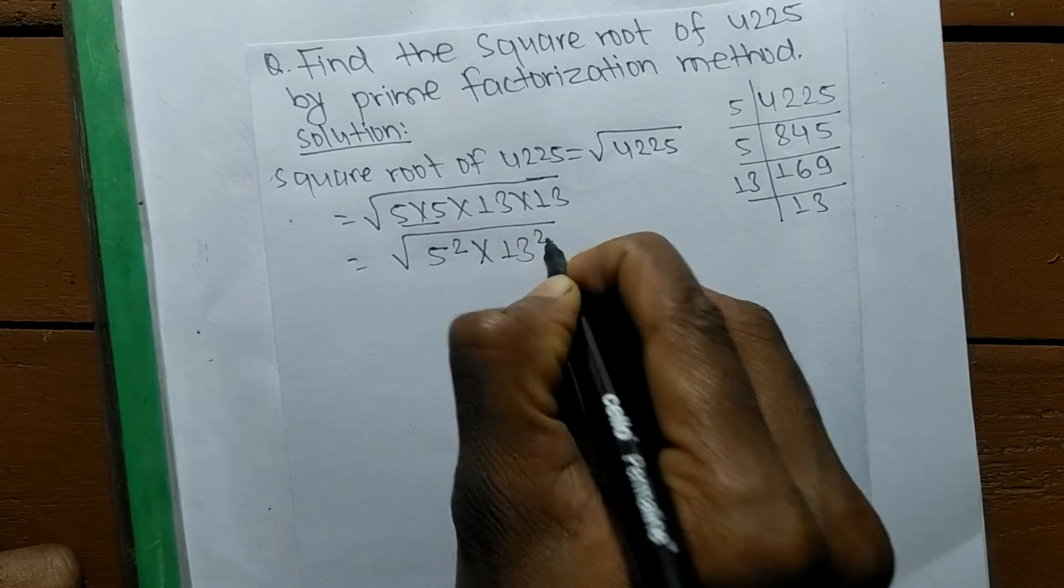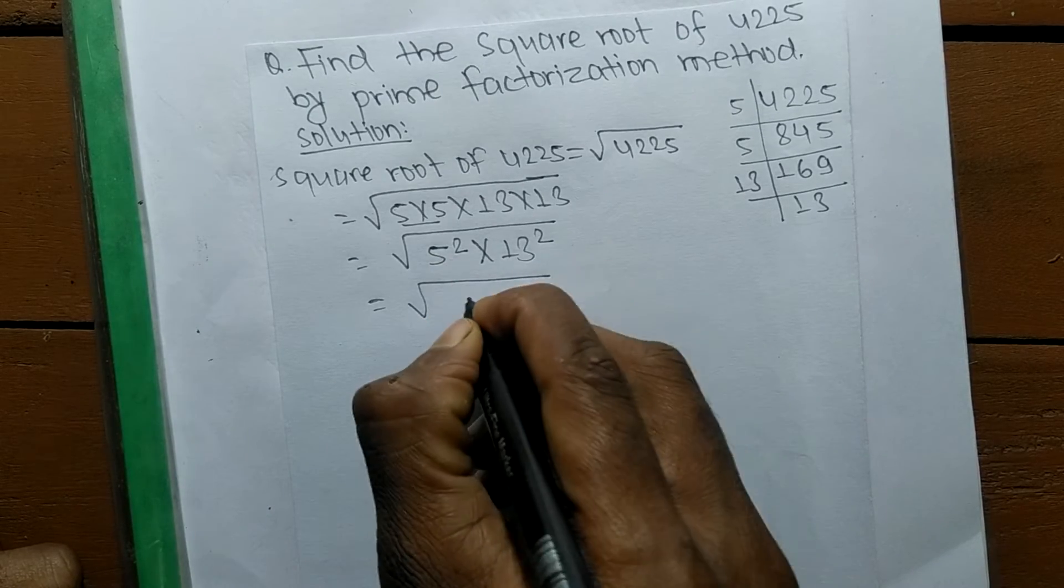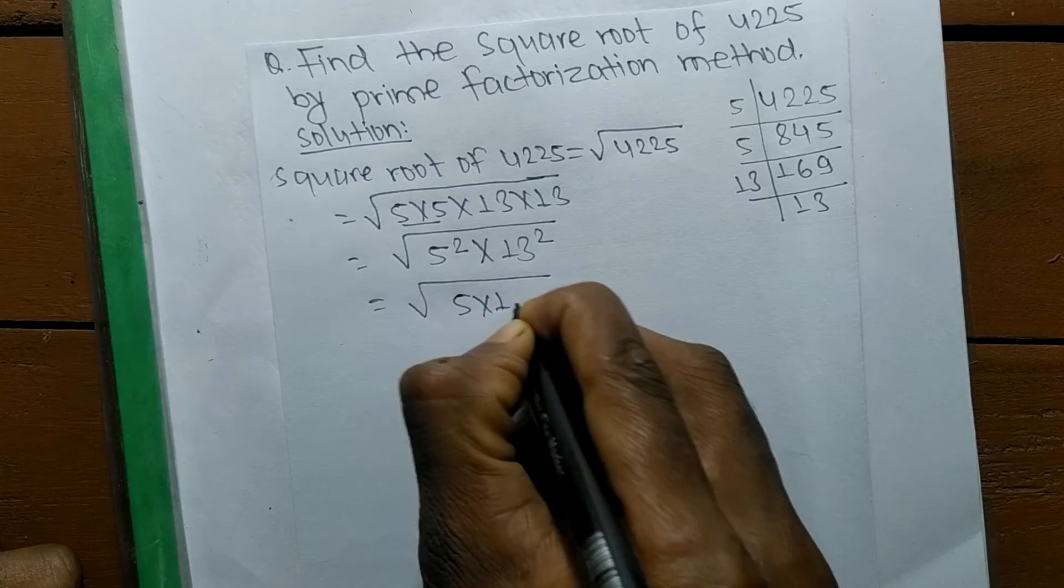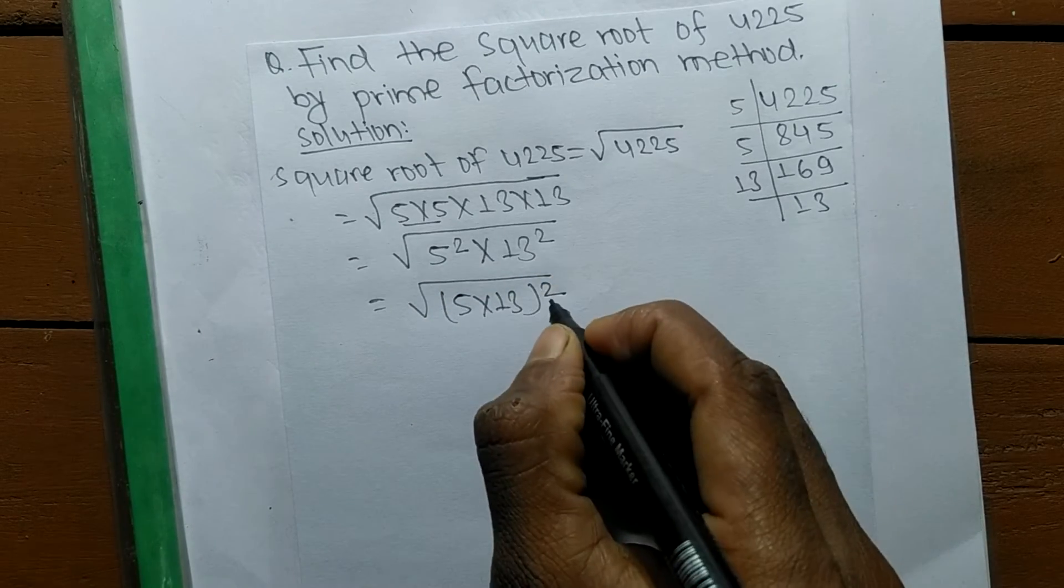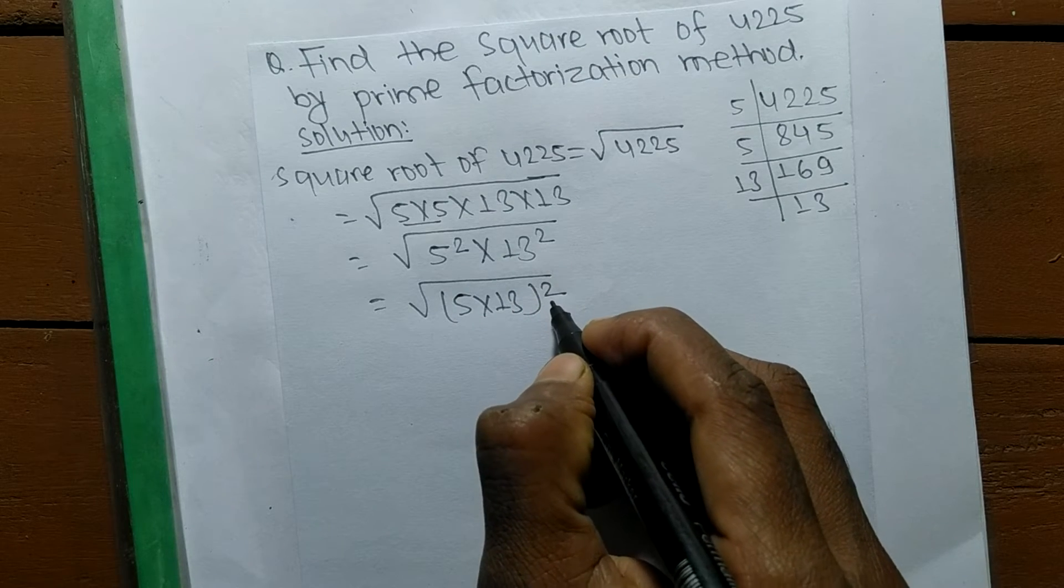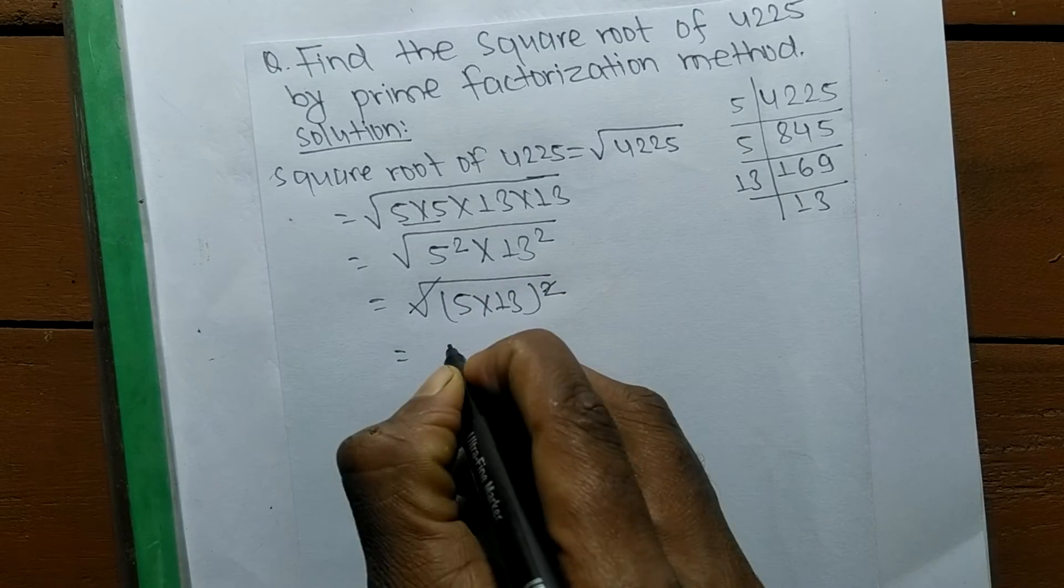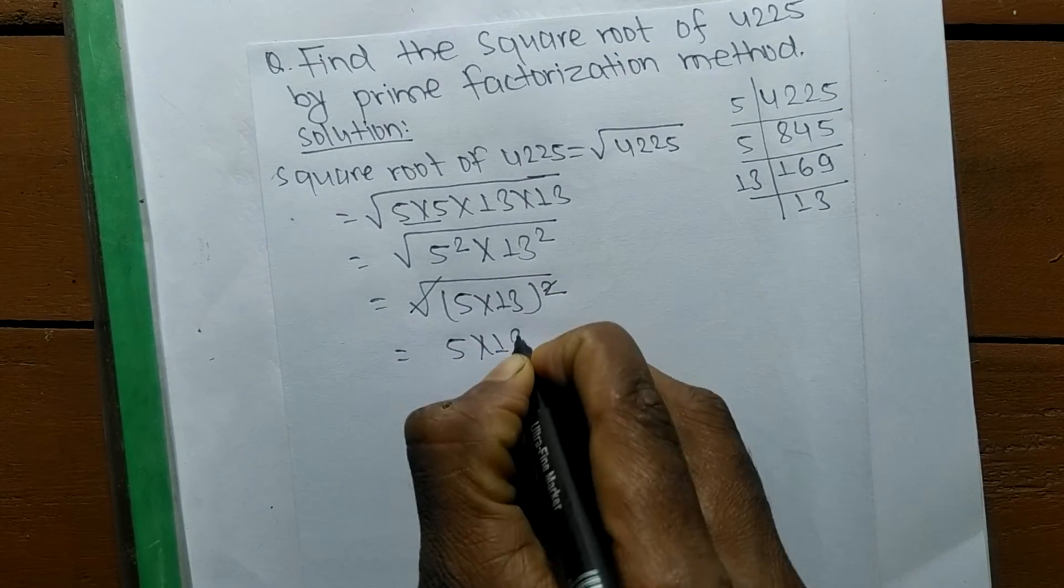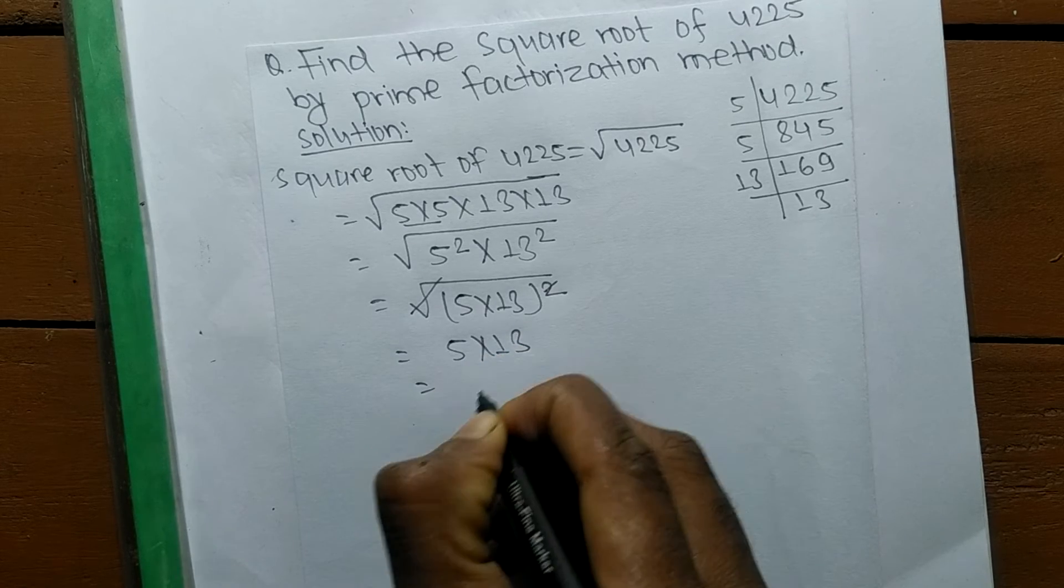Both the numbers contain a square. So we take common from both the numbers. Square is present in both, so we take a square as a common. A square and a square root cancel each other, so 5 into 13 comes out of the square root.